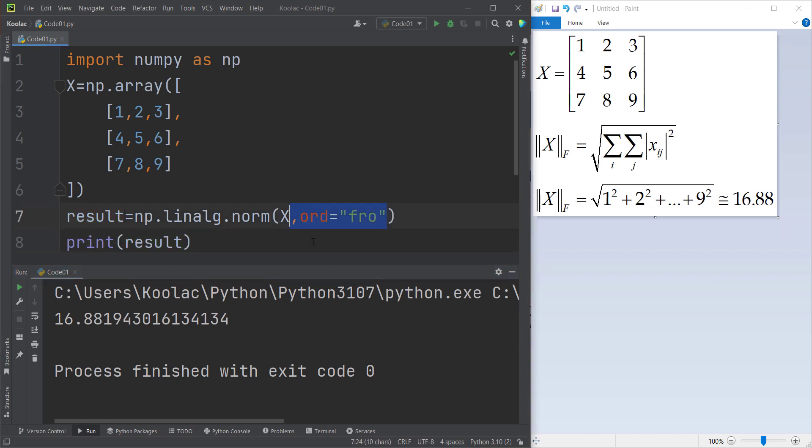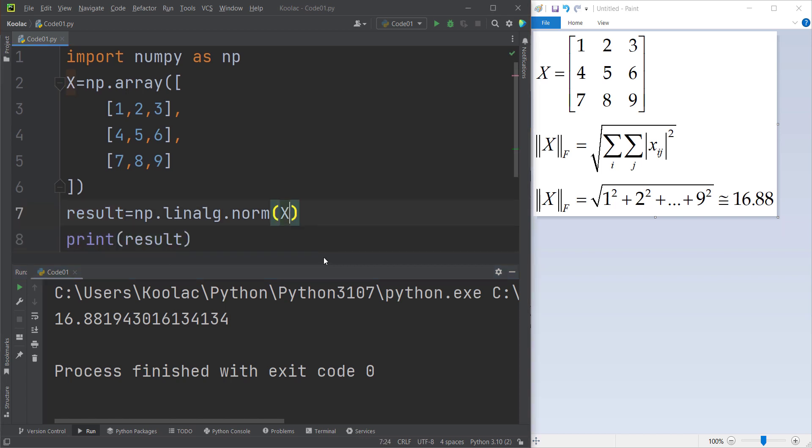And also remember that if you don't pass anything for the ord argument, the default argument for ord for the matrix is Frobenius norm.